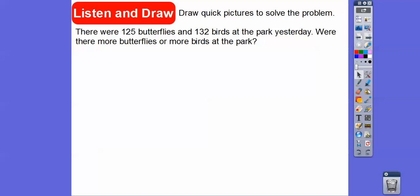So how do we compare three-digit numbers is our question here. We're going to draw quick pictures to solve the problem. So there were 125 butterflies and 132 birds at the park yesterday. Were there more butterflies or more birds at the park? It says draw a quick picture.